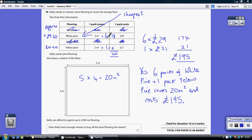Six packs covering three metres squared is 18 metres squared. One pack covering two metres squared is two metres squared. That's a total of 20 metres squared.